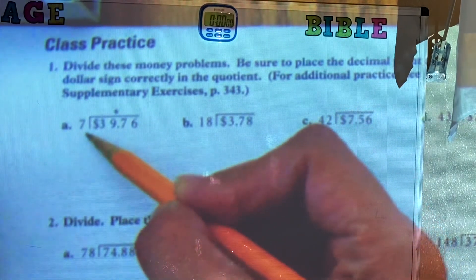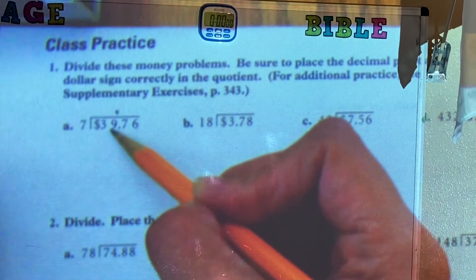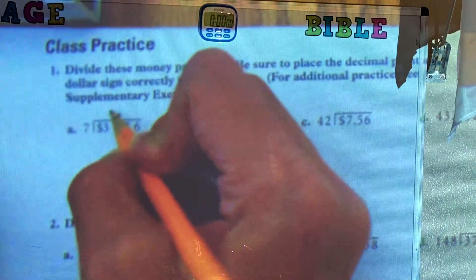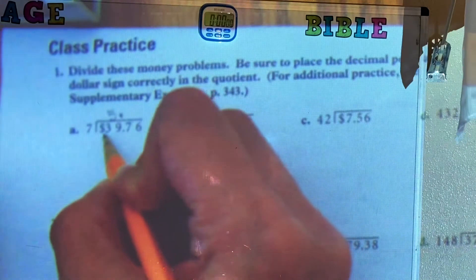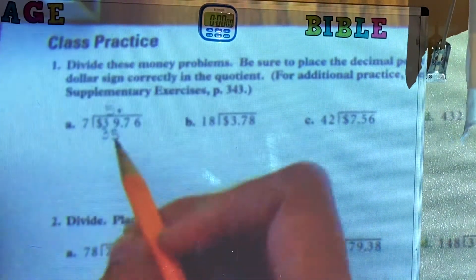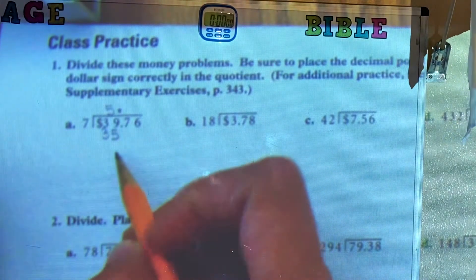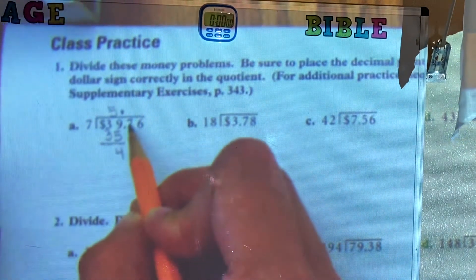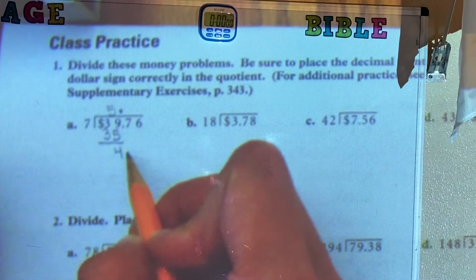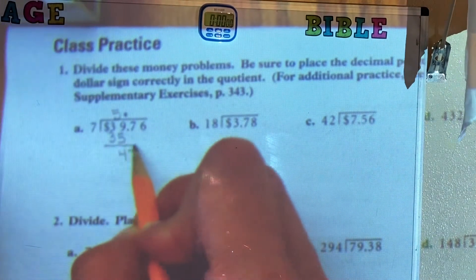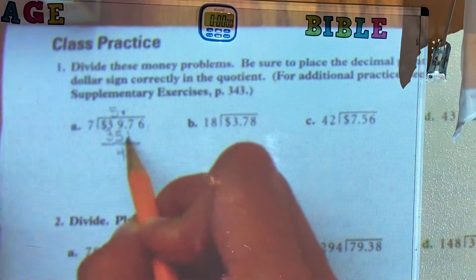So 7 goes into 39 how many times? It goes 5, right? So 5 times 7 is 35. And when we subtract, 39 minus 35, we have 4. And we bring down the 7.